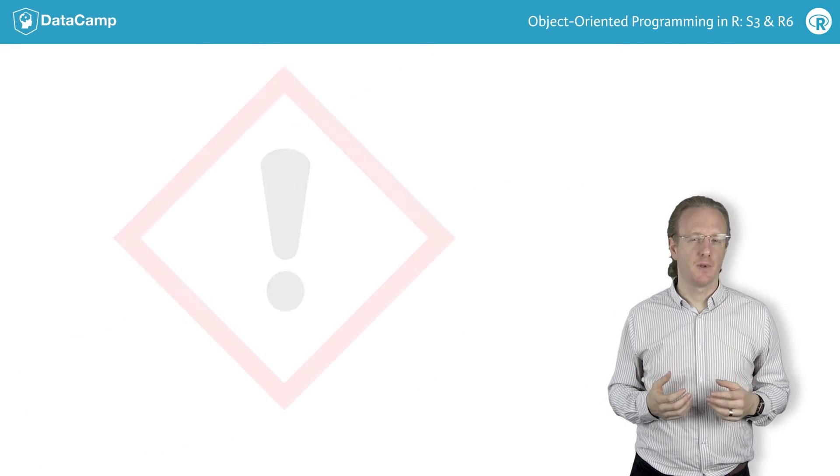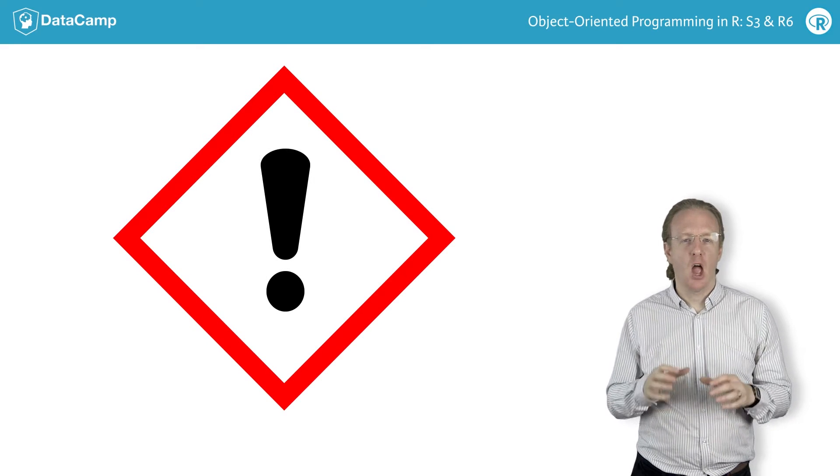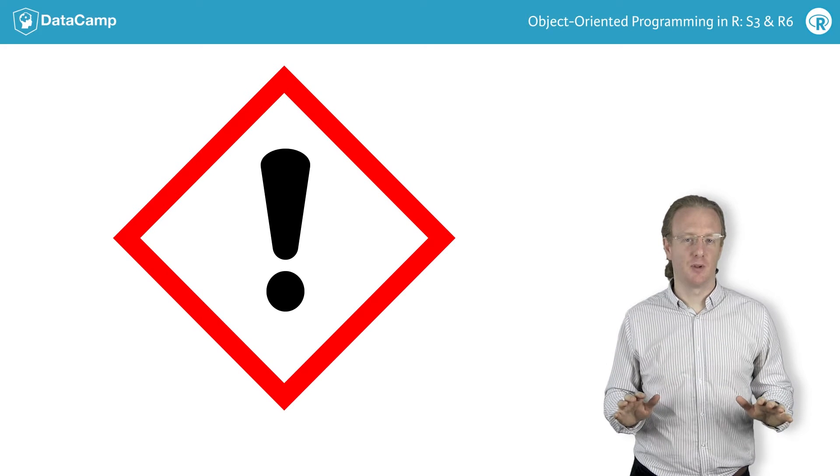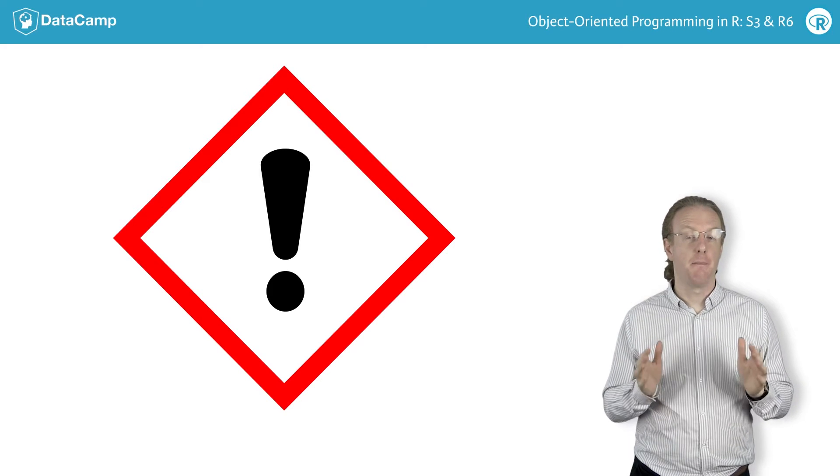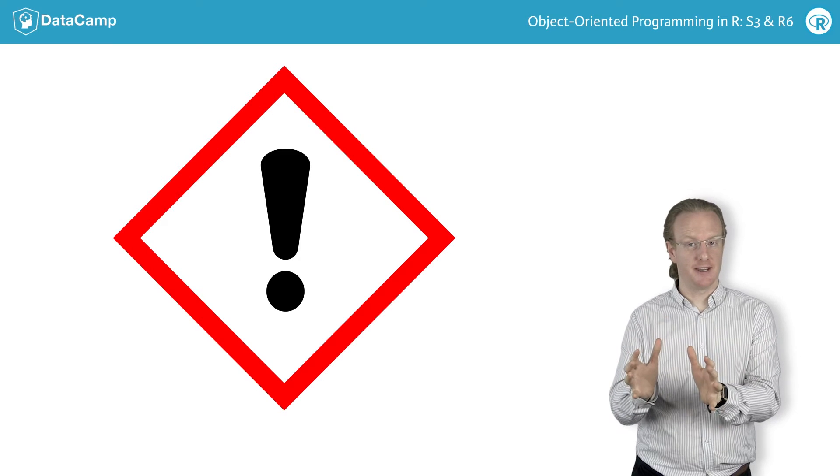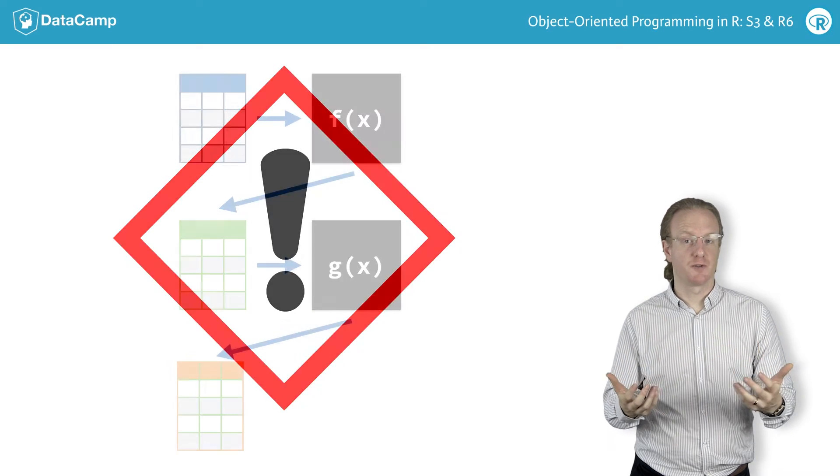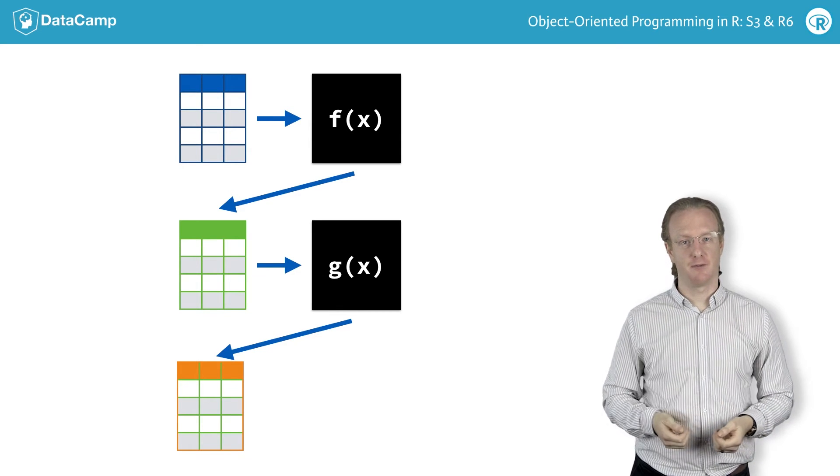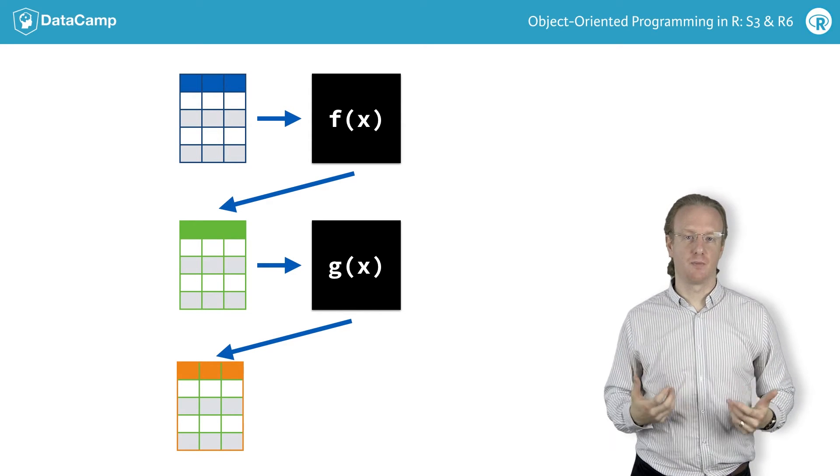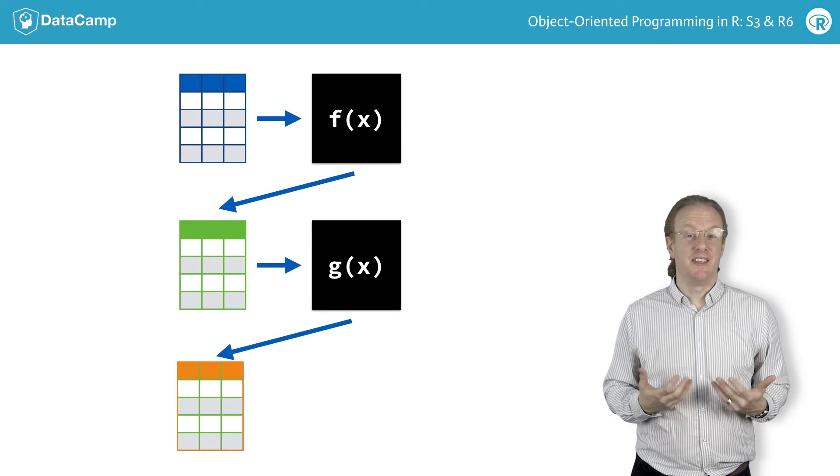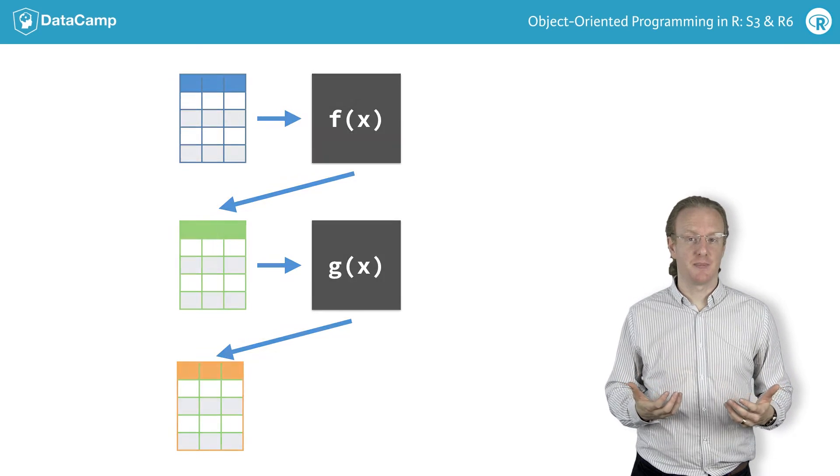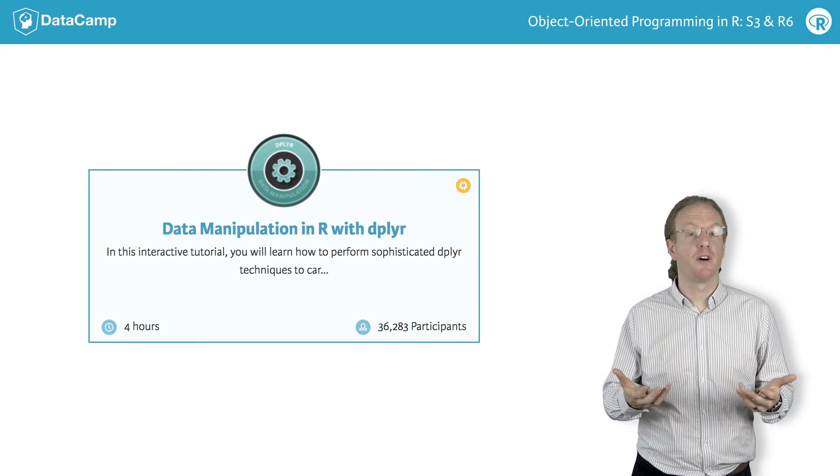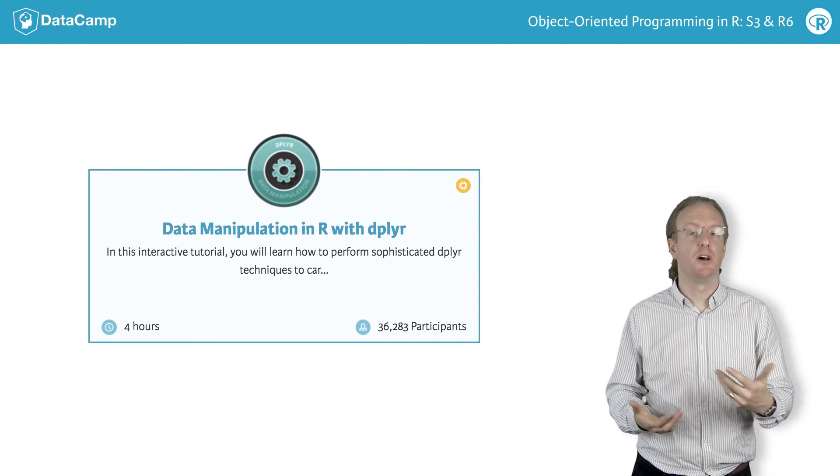Before we begin, a word of warning. A lot of the time, object-oriented programming isn't necessary or even desirable for data analysis. Most of the time, you want your data to be stored in a data frame, and you should use functions that take a data frame, manipulate it, and return another data frame. That is, the functional programming approach. This is the philosophy of the tidyverse packages, most notably dplyr. After you've finished this course, take one of our dplyr courses to see the alternate approach.